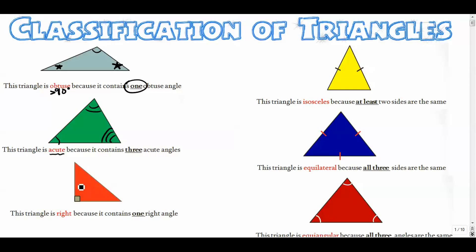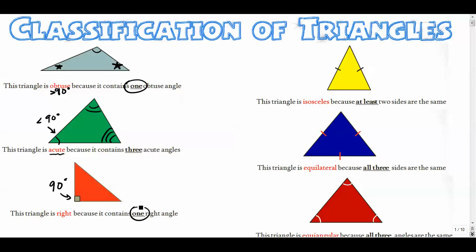This red one is a right triangle. This is probably the most common triangle to work with because the Pythagorean theorem applies and all sorts of other awesome stuff applies. So this is a right triangle because it has one right angle right here, and that's 90 degrees. Acute angles are all less than 90, obtuse angles are all bigger than 90, and right angles are exactly 90. A right triangle only has one right angle — it can't have more than that.